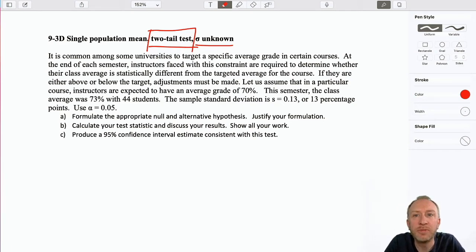So let's assume that in a particular course, instructors are expected to have an average grade of 70 percent. This semester, the class average was 73 percent with 44 students. The sample standard deviation is 13 percentage points.